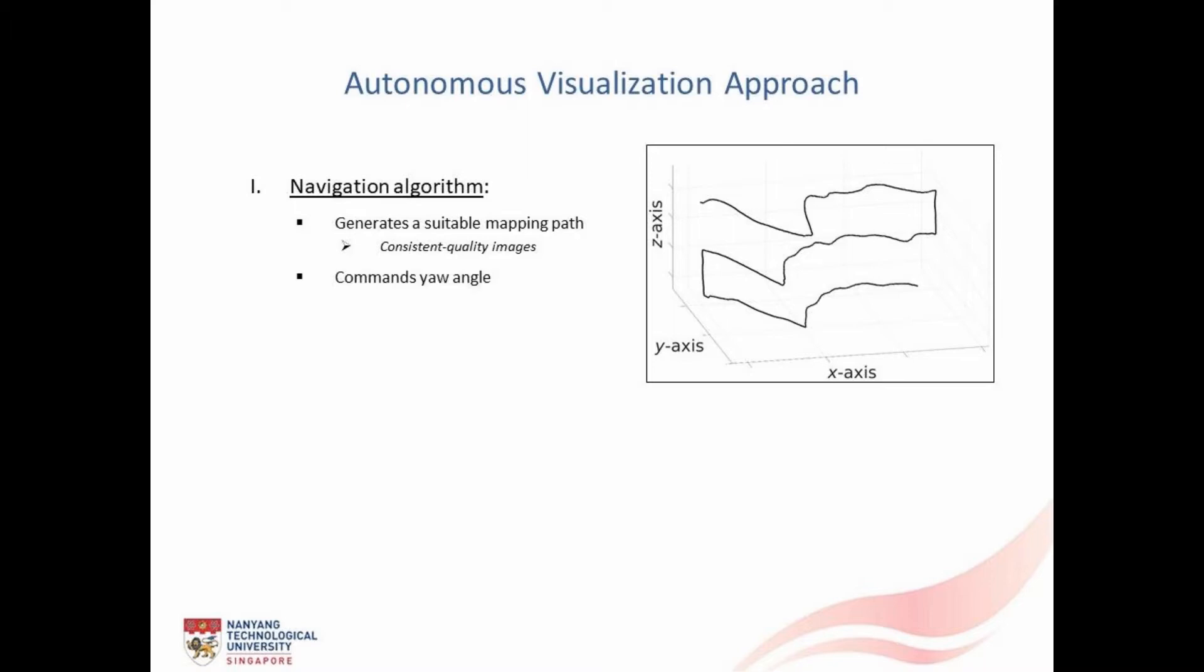Additionally, by utilizing the data from the two inclined distance sensors, the navigation algorithm also commands the yaw angle such that the robot always faces the outcrop.